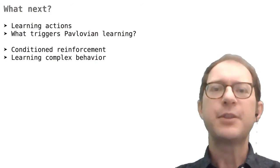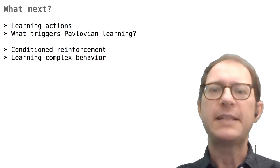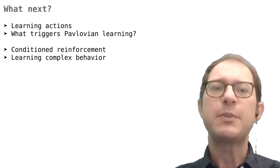This lesson is over. Here are some suggestions on what to study next. The first two lessons explore some more similarities between instrumental and Pavlovian conditioning. The next two are about how animals learn more complex behavior, that is, sequences of actions rather than single actions. Happy learning to everyone!